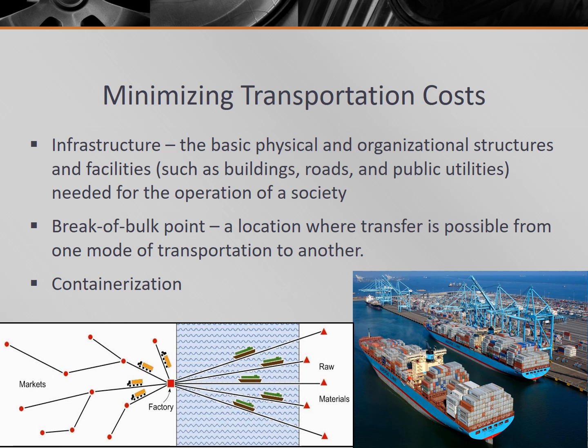Improvements in infrastructure — that is, the basic physical and organizational structures and facilities such as buildings, roads, and public utilities needed for the operation of a society — have led to declining transportation costs. The development of rail and road infrastructure, as well as the use of airplanes, ships, and supertankers, have greatly reduced the costs of shipping raw materials and finished products around the world. This is part of space-time compression that we discussed back in Chapter 1.